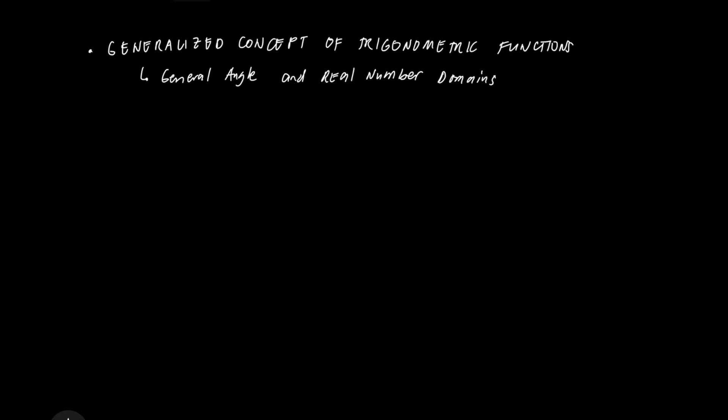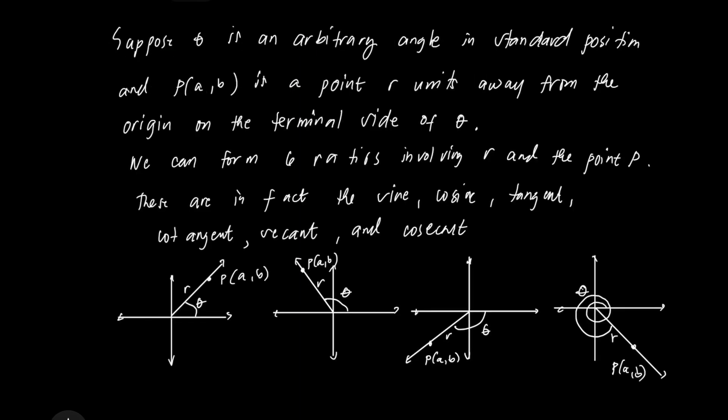Previously, we introduced the concept of trigonometric functions of acute angles and tied the idea to right triangles. This time, we are going to generalize the concept to include angle domains of arbitrary size in degree or radian measure, whether they are positive, negative, or zero.